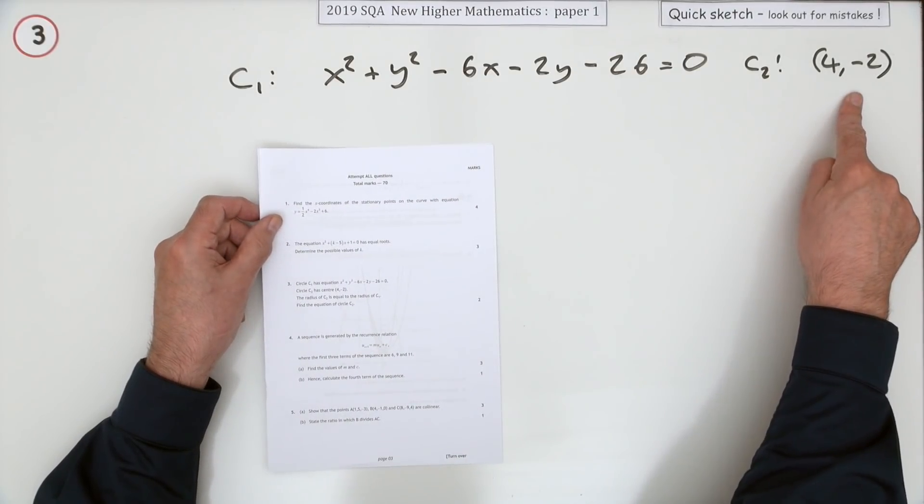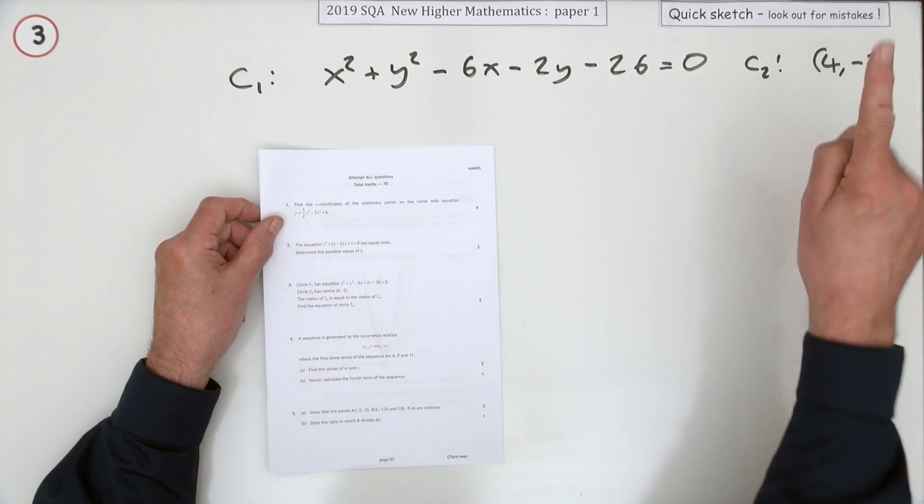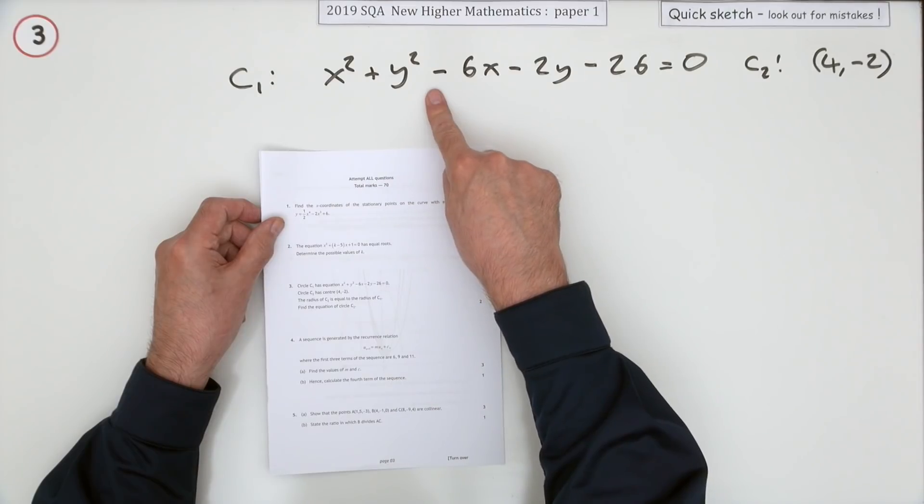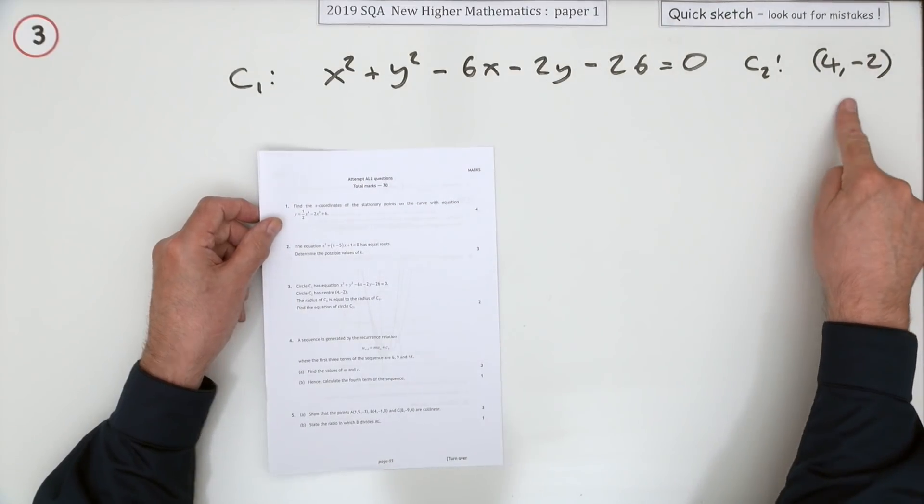You're told the centre of the second circle and you're told the radius of the second circle is equal to the radius of the first one. So what's the equation of this one?